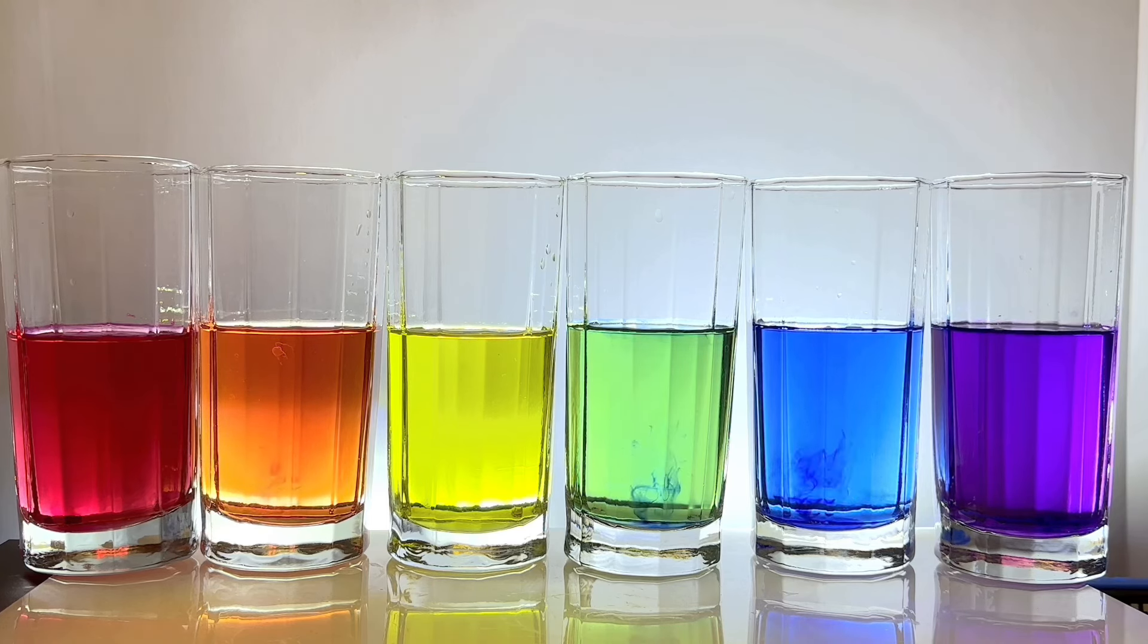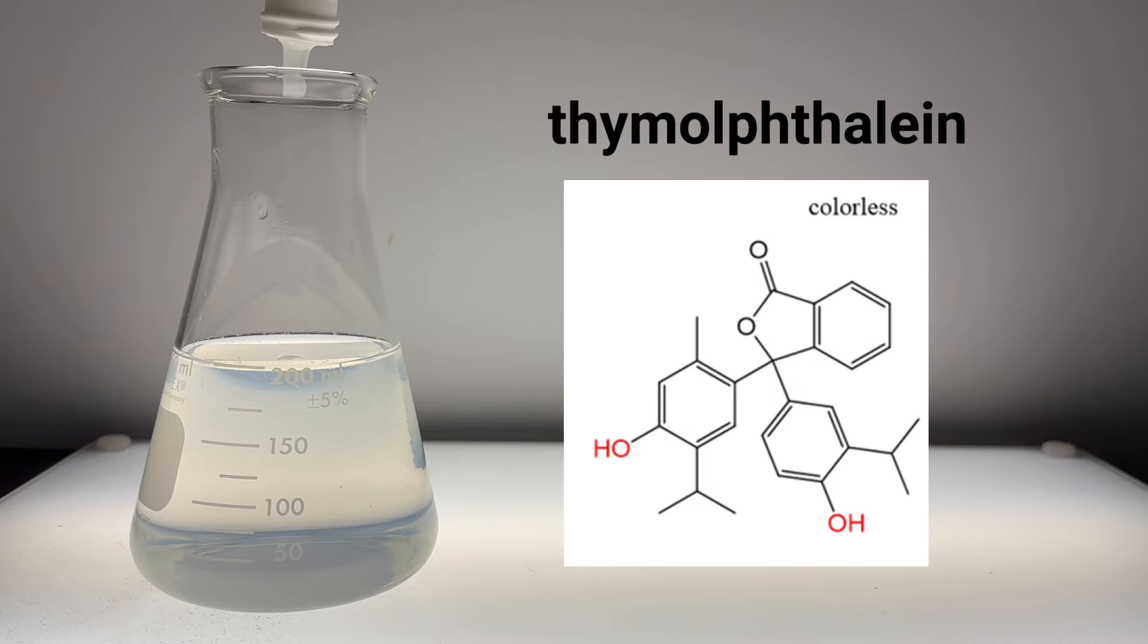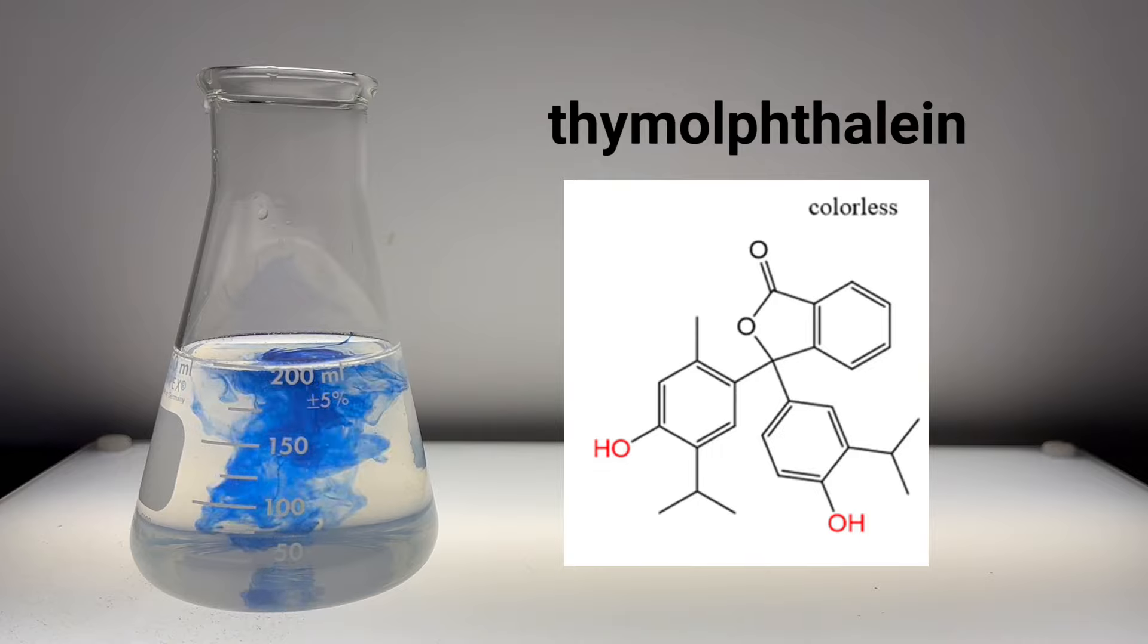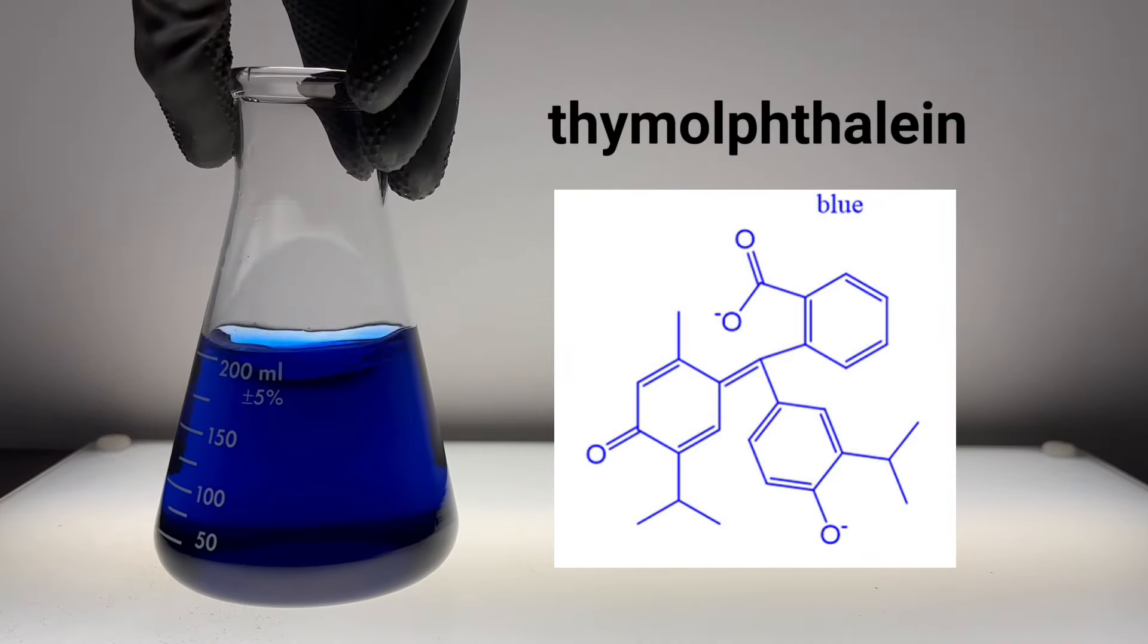To show you how to generate the blue color, I'm going to add some base to this flask that contains a chemical called thymolphthalein. In the presence of base, thymolphthalein molecules undergo a ring opening reaction, and this change in chemical structure causes a shift to a blue color.